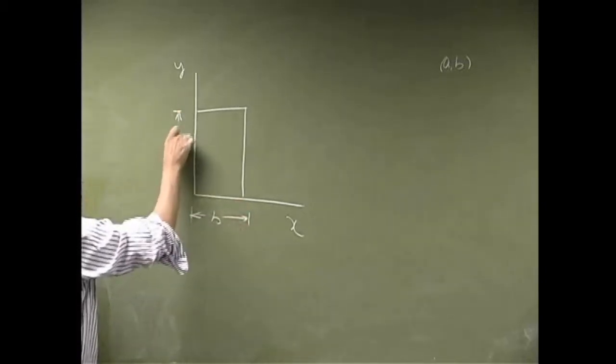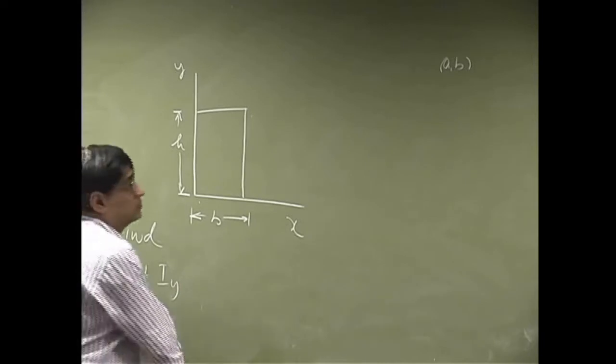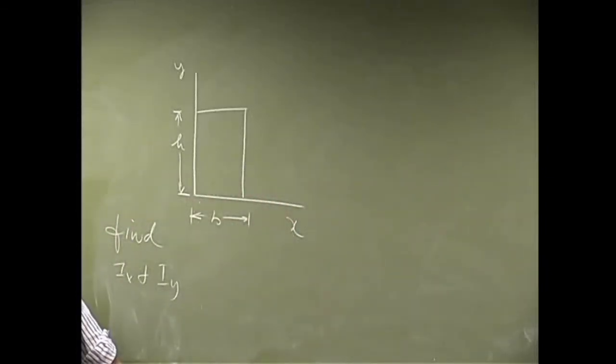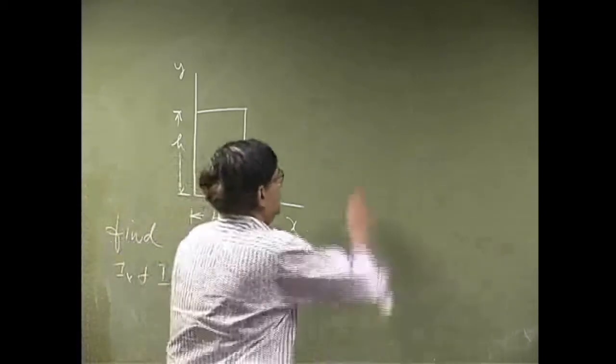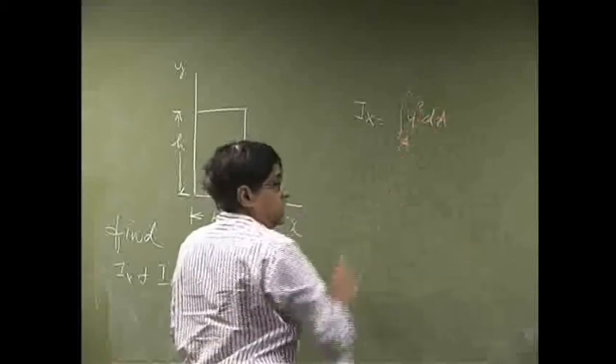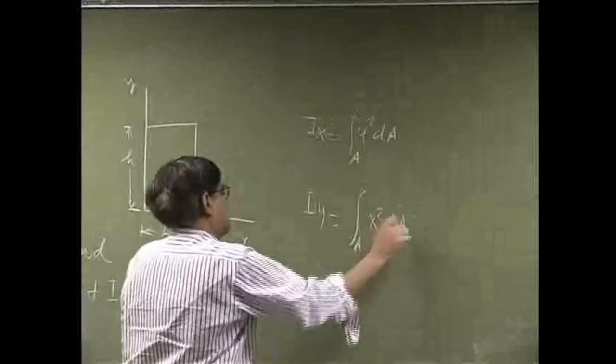We take this as H, and you want to find Ix and Iy. How do we do this one? When you look at the actual definitions, you have Ix as y squared dA with an area integral. We got Iy as area integral x squared dA.